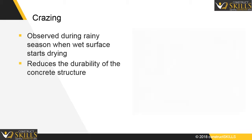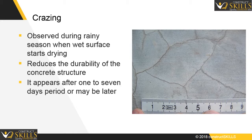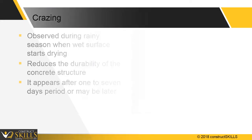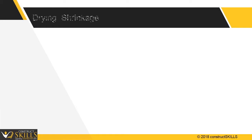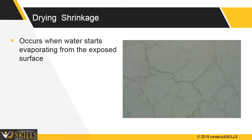Crazing will result in a reduction of durability of the concrete structure. It appears in 1 to 7 days or maybe later. The rapid loss of moisture content will result in a decrease in volume and constant drying shrinkage. It occurs when water starts evaporating from the exposed surface of the plaster.